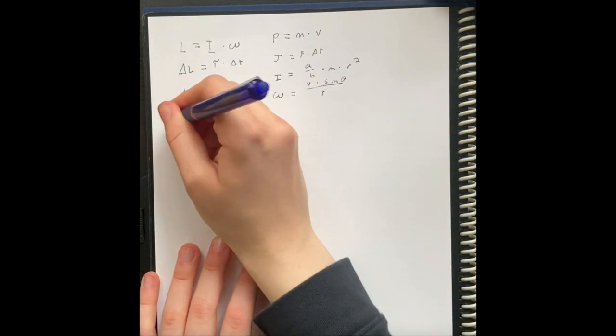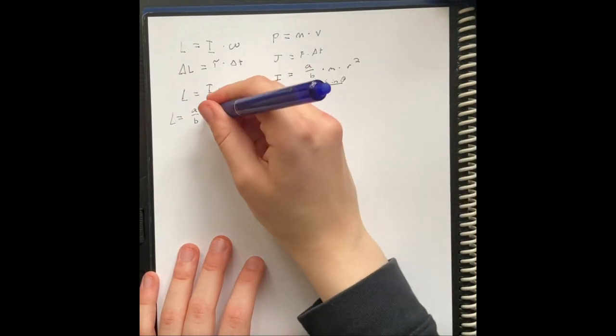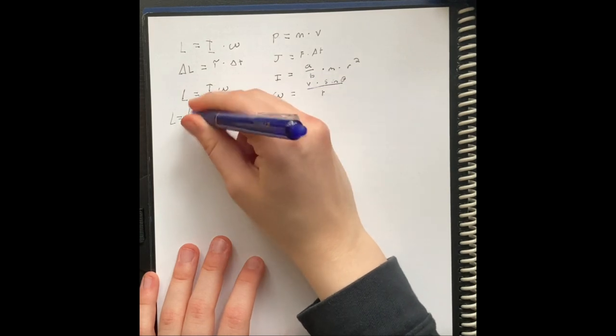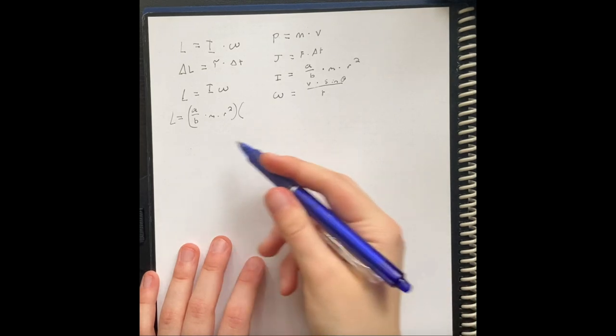So now, we can put these into our original equation. L equals a over b times mass times radius squared. All of that is going to be times, although it doesn't really matter because it's all multiplication.